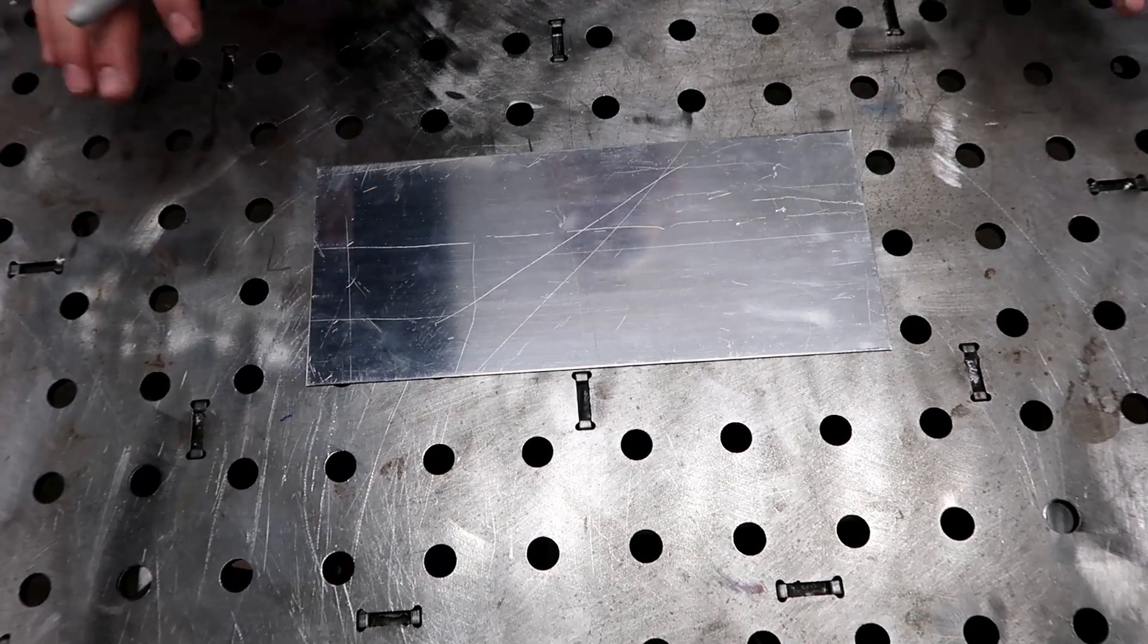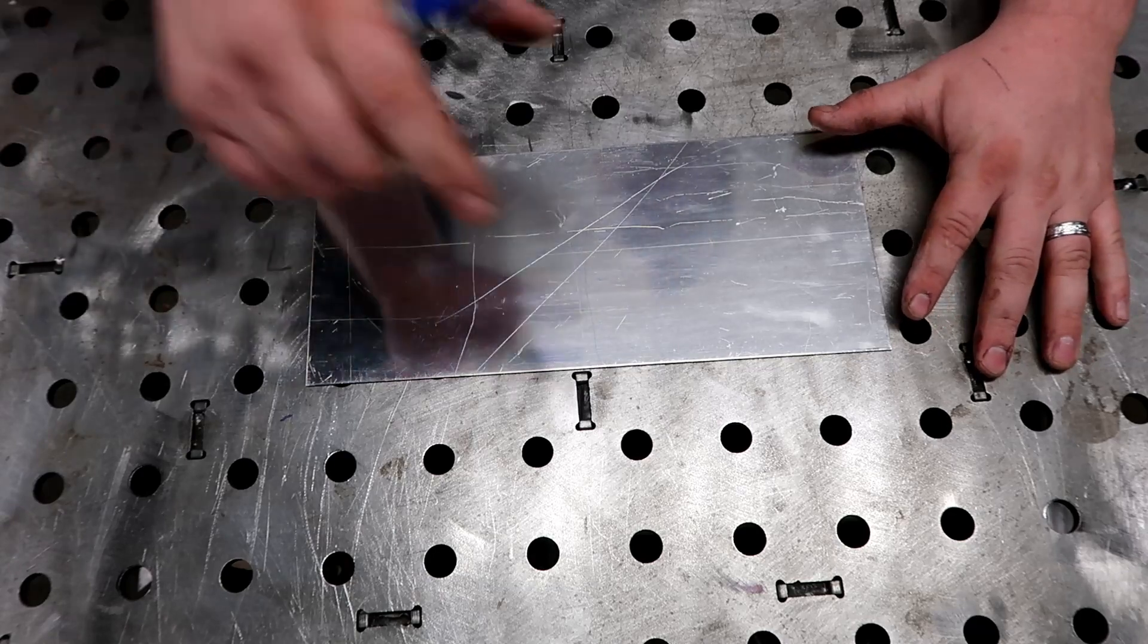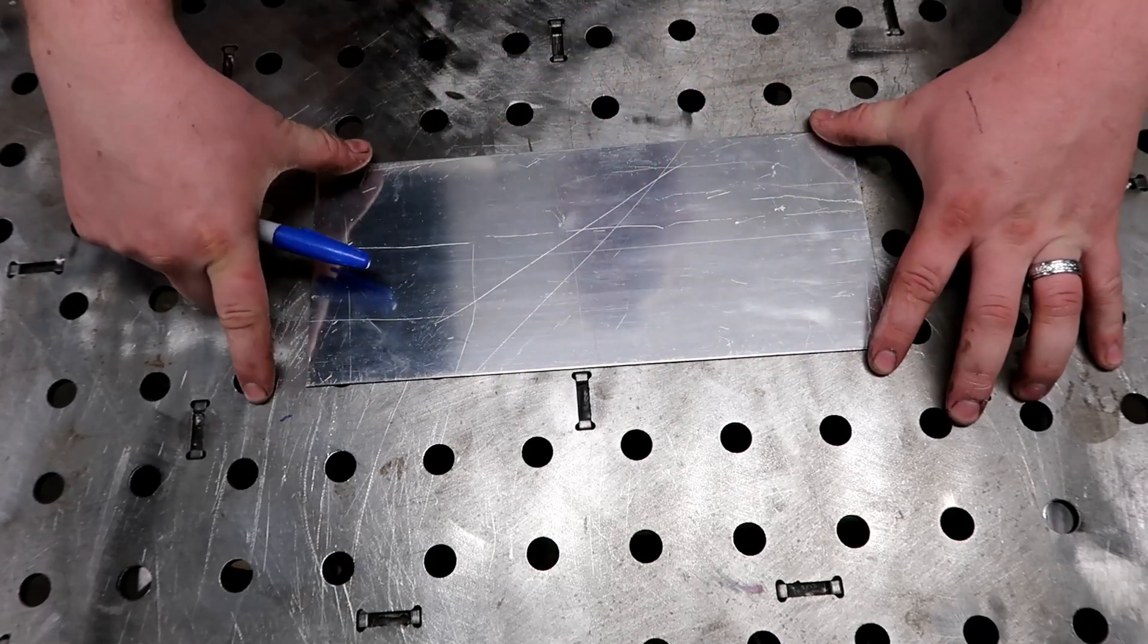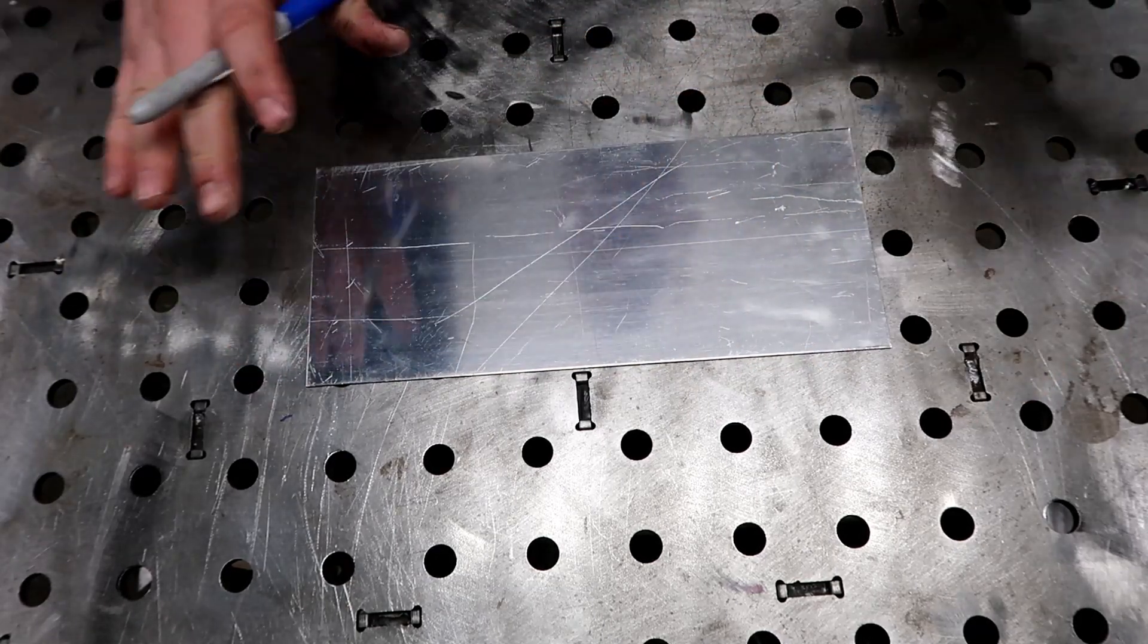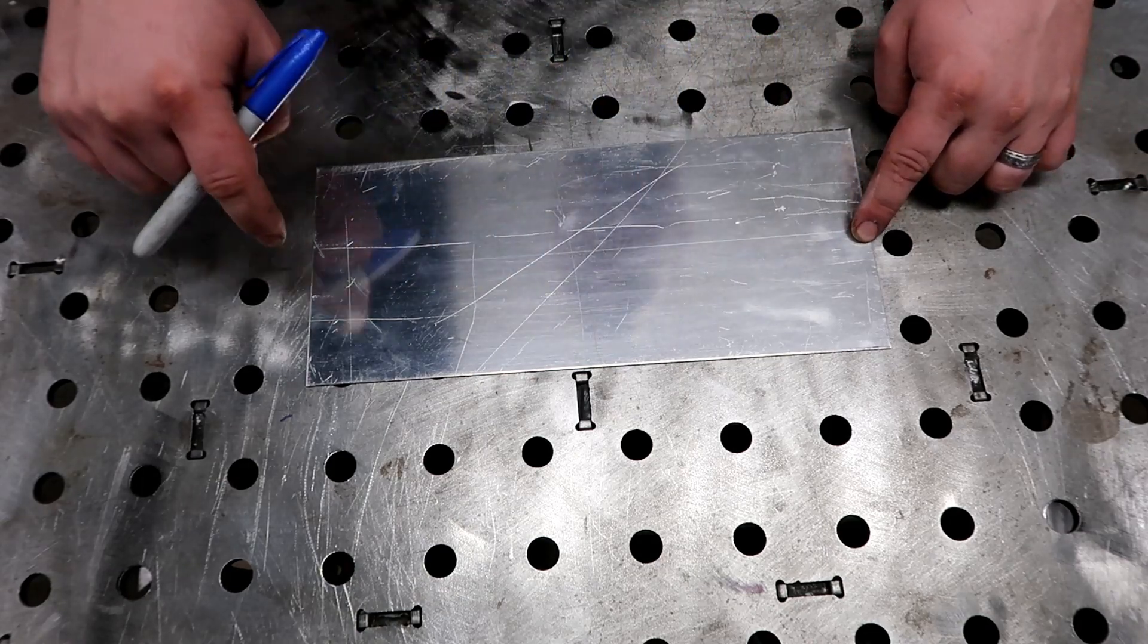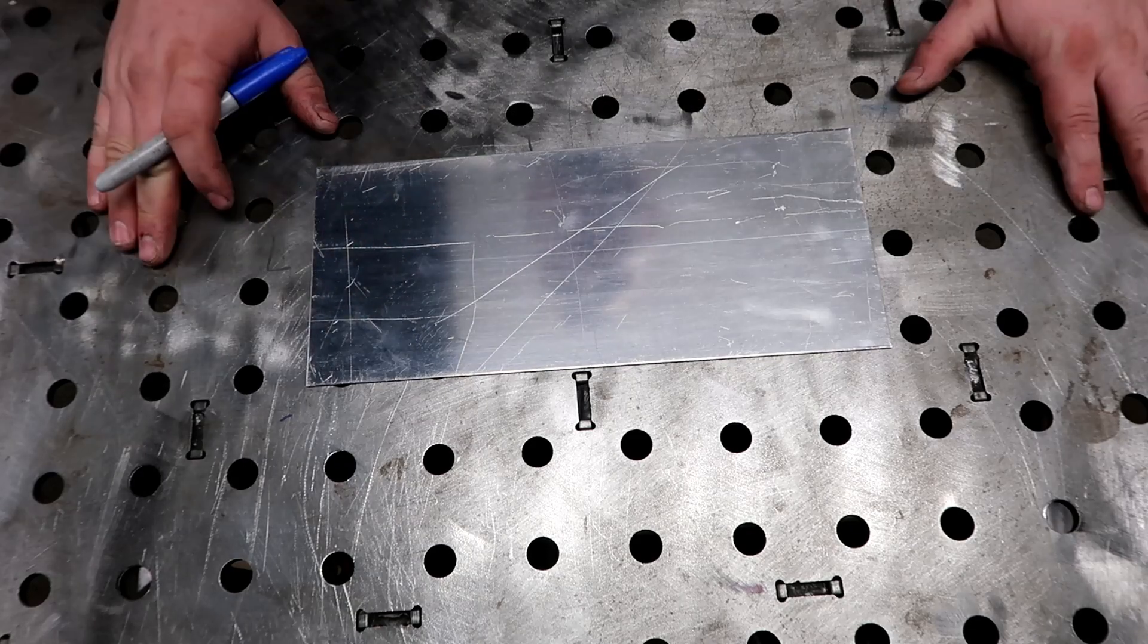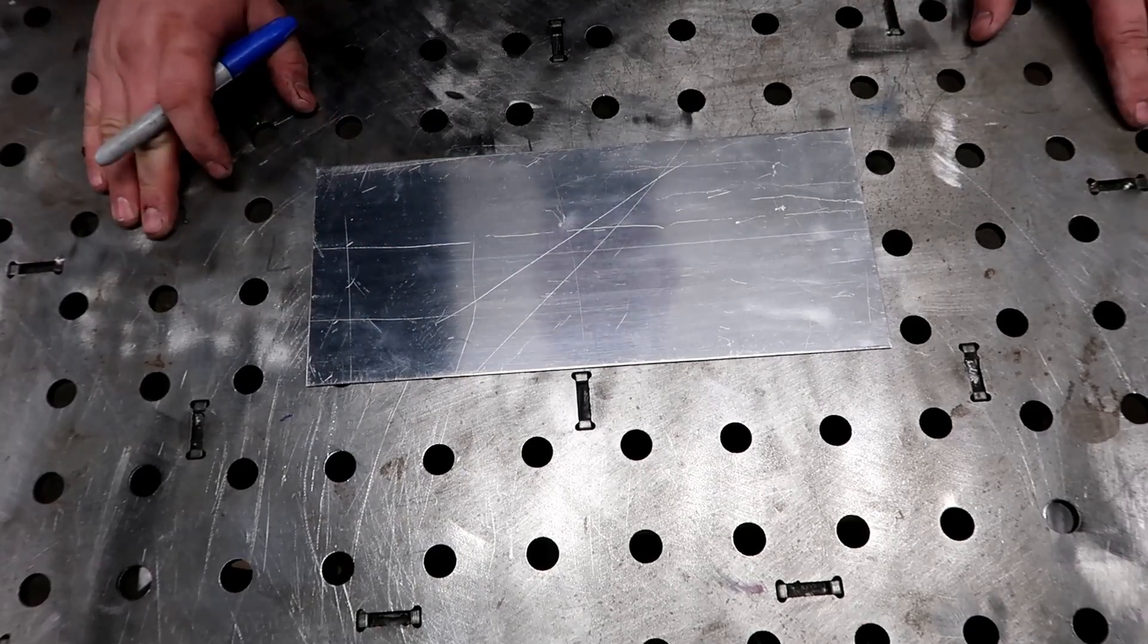Our first hack is a way to establish a line down the center of a piece of material. This piece of material can be square or trapezoidal. Either way, this method will work to establish a line that goes down the exact center of this piece of material without having to do any substantial math.